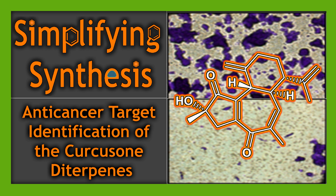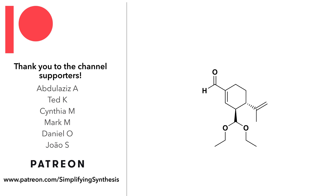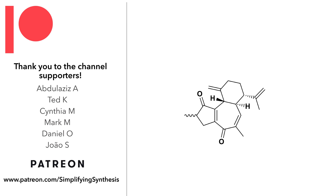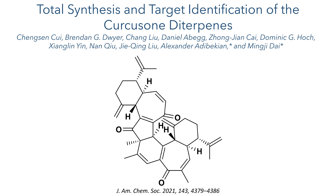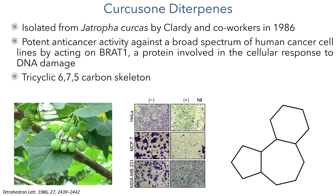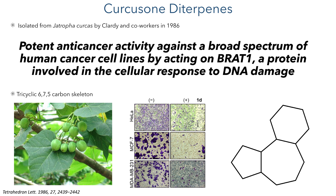Welcome back to Simplifying Synthesis. In this video we are going to look at the anti-cancer target identification of the curcuzone diterpenes. In the last video we looked at the total synthesis of a range of curcuzone diterpenes published this year by the Adobeckian and Dye groups. These compounds have a potent activity against a broad range of human cancer cells by acting on BRAT1, a protein involved in the cellular response to DNA damage. In this video we will look at how they identified this protein target and how they elucidated the anti-cancer effects of these compounds.